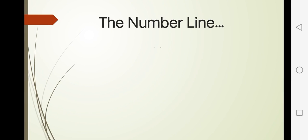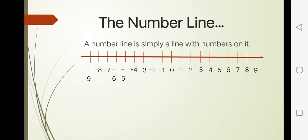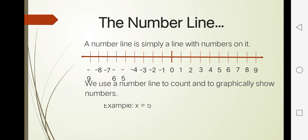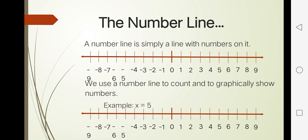The number line. This represents a number line with numbers on it. We use a number line to count and to graphically show numbers. For example, x is equal to 5. There you go.